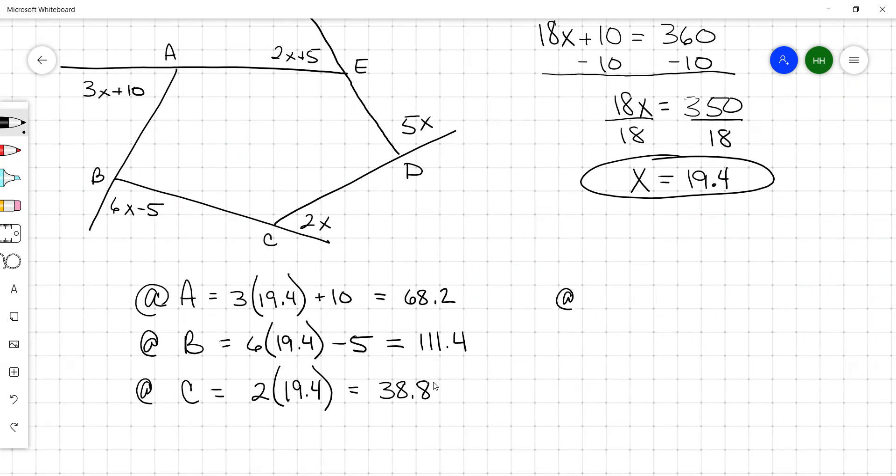We got at D. That's 5 times the 19.4. That's 97.